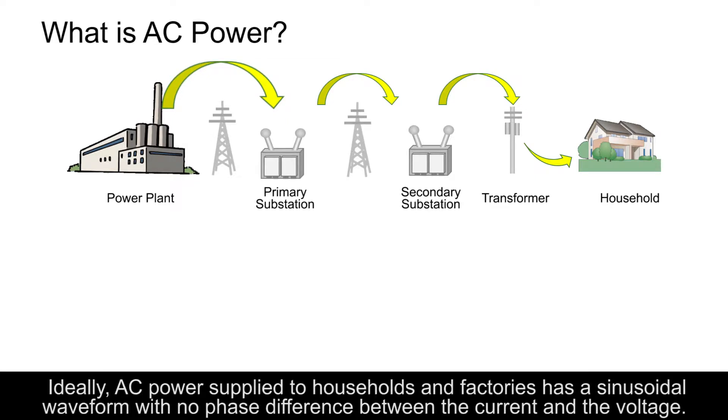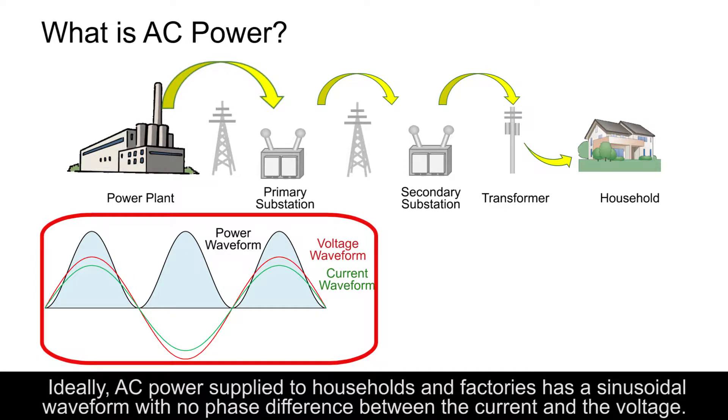Ideally, AC power supplied to households and factories has a sinusoidal waveform with no phase difference between the current and the voltage.